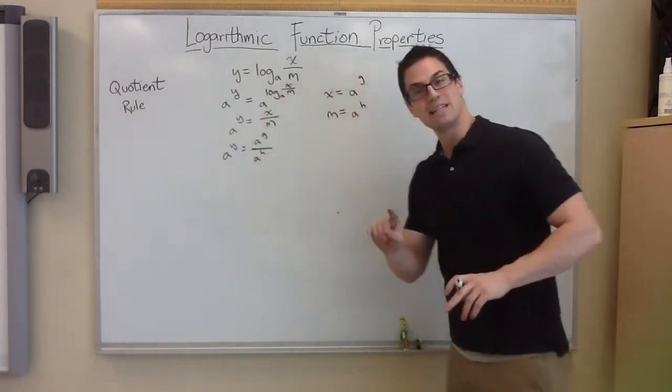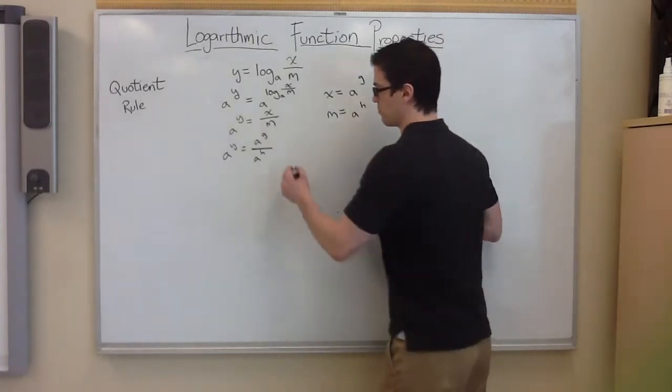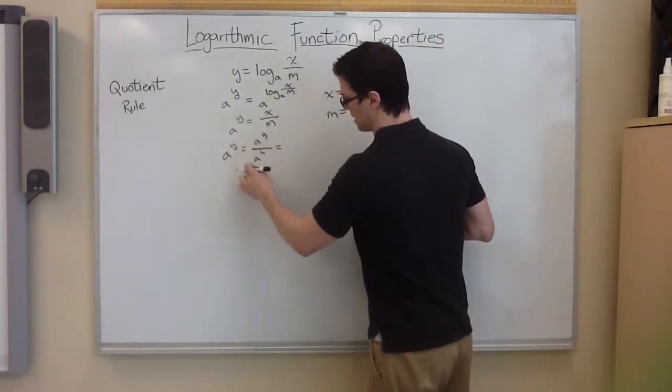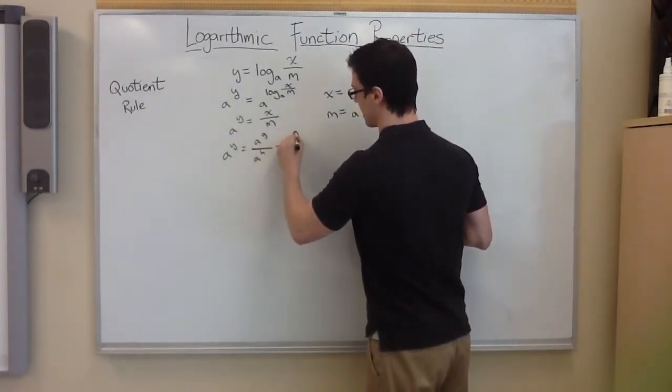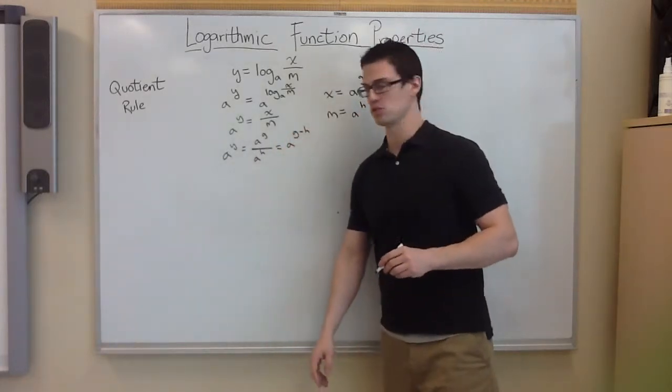Now, if you remember your basic exponential rules that you can do when you're dividing things with a common base, these both have base a, you just subtract the exponents. a to the g minus h, just like that.